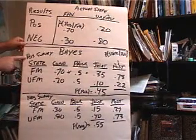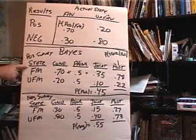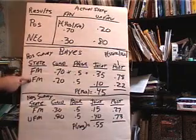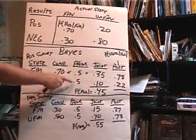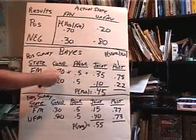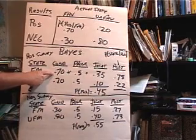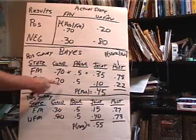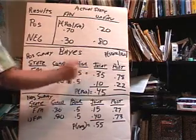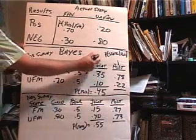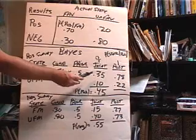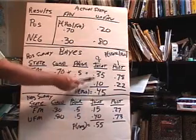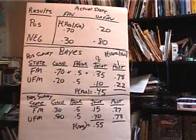Let's look at this chart for a positive indicator. The states of nature are favorable or unfavorable markets. The prior probabilities of these original states are 50/50. Then we put our conditional probabilities on there: the probability of positive given favorable is 0.70, and the probability of positive given unfavorable is 0.20. We multiply the conditional by the priors to get the joint probabilities — 35% is the probability of positive and favorable, and 10% is the probability of positive and unfavorable. Adding those together gives 45%, which is the probability of positive.